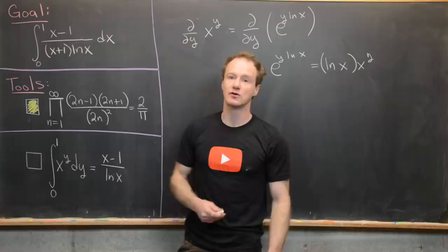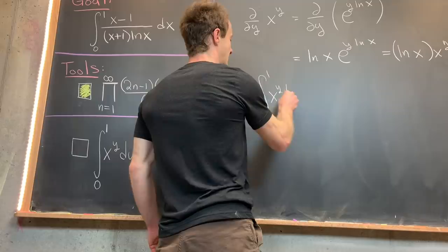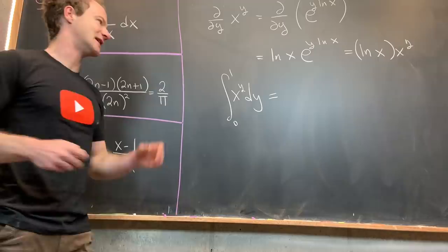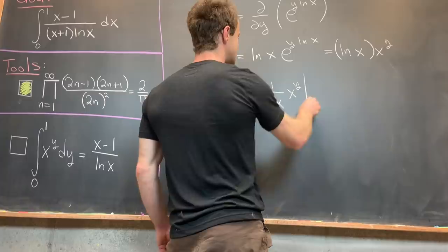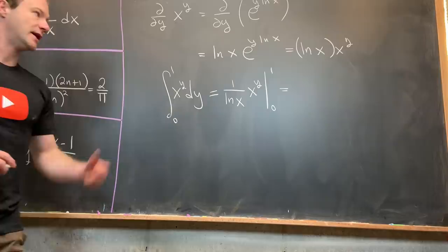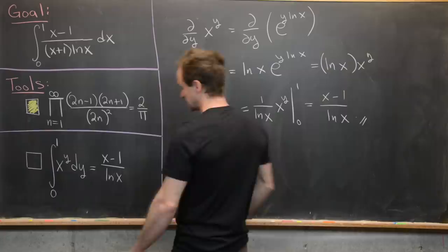This derivative relationship lets us evaluate the integral from 0 to 1 of x to the y dy. The natural log of x is a constant, so instead of multiplying we divide: we get 1 over the natural log of x times x to the y, evaluated at 0 and 1. At y equals 1 we get x; at y equals 0 we get 1. So the result is x minus 1 over the natural log of x, which is exactly what we wanted to show.